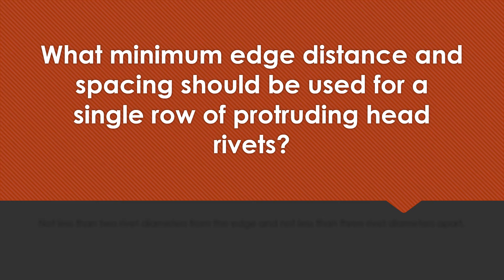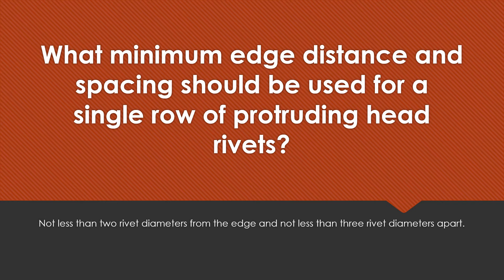What minimum edge distance and spacing should be used for a single row of protruding head rivets? Not less than two rivet diameters from the edge and not less than three rivet diameters apart.